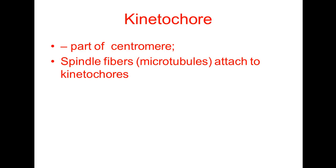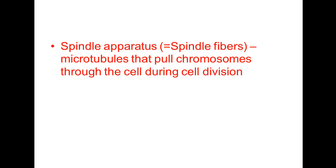Another structure is the kinetochore — think 'connector.' The kinetochore is a part of the centromere, basically on its surface. This is where the spindle fibers, or microtubules, attach. The spindle fibers, or spindle apparatus, are microtubules that radiate out from either end of the cell, attach to the chromosomes, and pull the chromosomes through the cell during cell division.